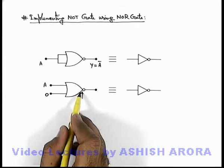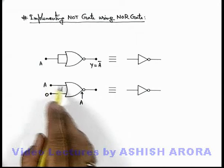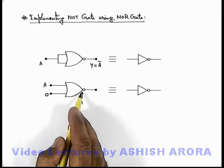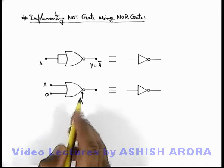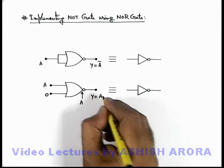the output of this OR gate will be A plus zero, that will be A, because if A is zero, the output of OR gate will be zero, and if A is 1, the output of OR gate will be 1. And this inverter will invert it, so final output will be A prime or A bar.